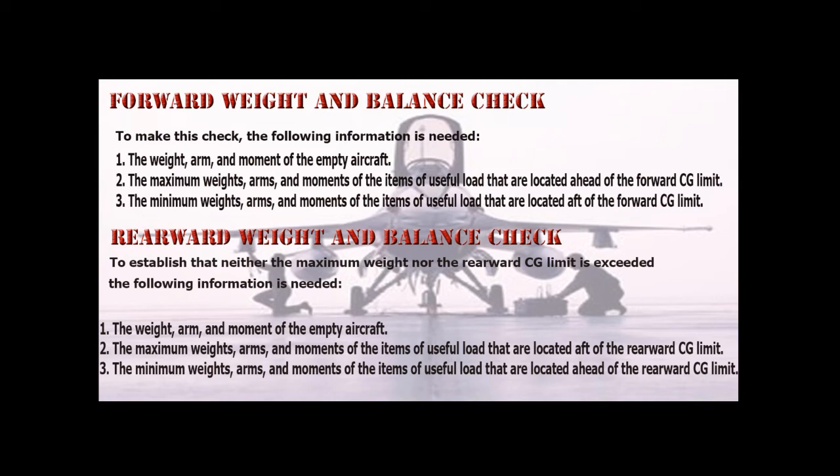Rearward Weight and Balance Check: To establish that neither the maximum weight nor the rearward CG limit is exceeded, the following information is needed: (1) the weight, arm, and moment of the empty aircraft; (2) the maximum weights, arms, and moments of items of useful load located aft of the rearward CG limit; and (3) the minimum weights, arms, and moments of items of useful load located ahead of the rearward CG limit.